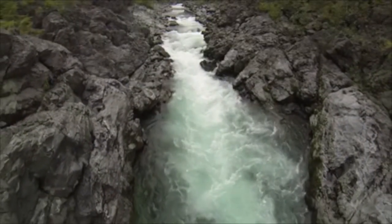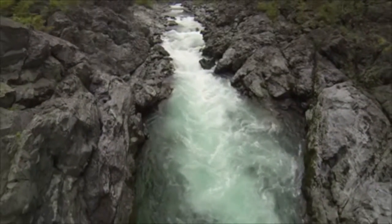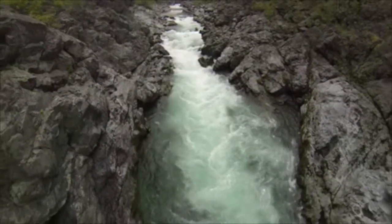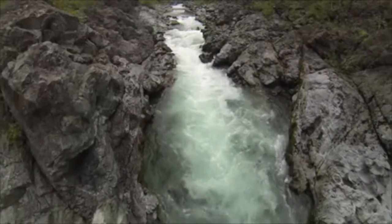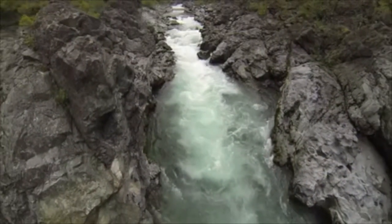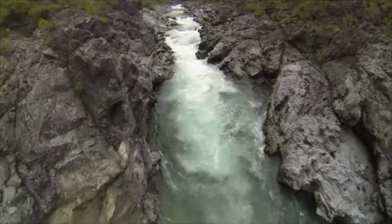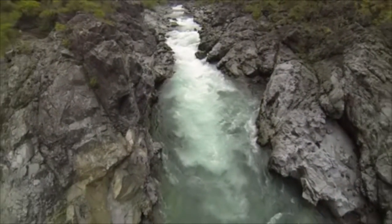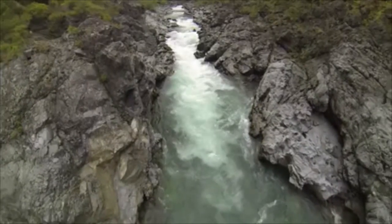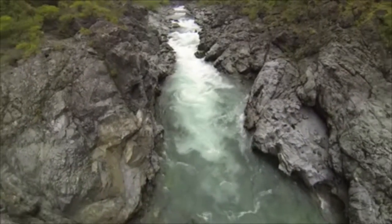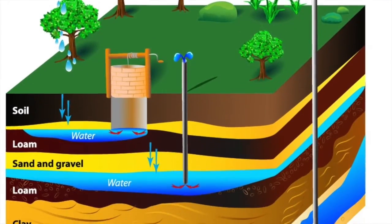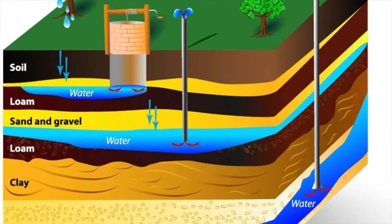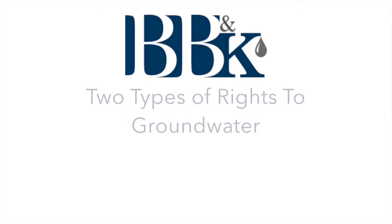Surface water is water flowing on the surface of the ground, underflow of that surface water, or water flowing underground in a known and definite channel. Groundwater is percolating groundwater, which is water in an aquifer.